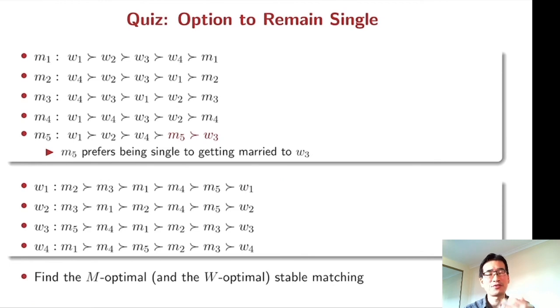So here we have our first quiz in this video. The similar situation, but M5 prefers remaining single over getting married to W3. Please find the man-optimal stable matching and woman-optimal stable matching.